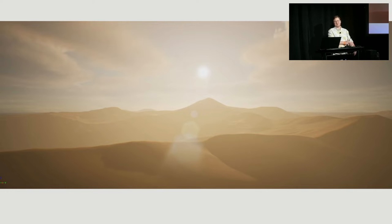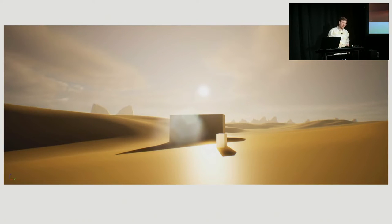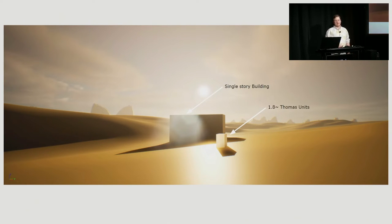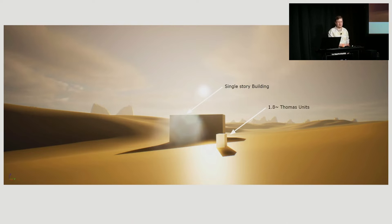We're going to rabbit hole and put a building — 1.8 Thomas units. We're at Silhouetting Pass 2, just setting scale: these are roughly a building, this is roughly a human in the world. And you'll see we can't see over our rolling hills. There's no visual interest in the scene. We can't see our rolling desert anymore.